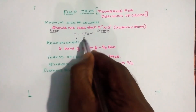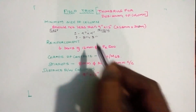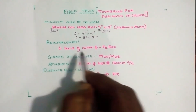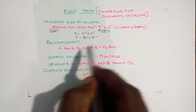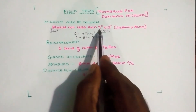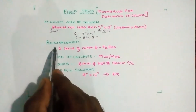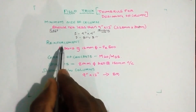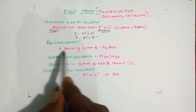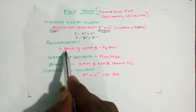If you look at the dimensions, they should not be less than 9 inches by 12 inches. The second rule is reinforcement. For a 9 inches by 12 inches column, you can use 16 mm diameter bars for the main reinforcement.